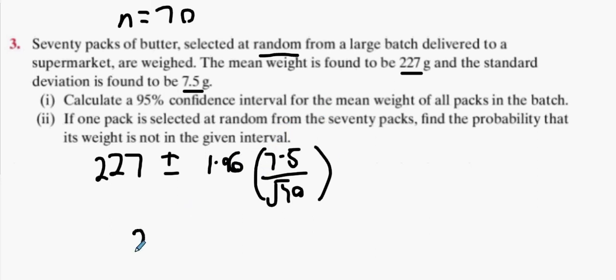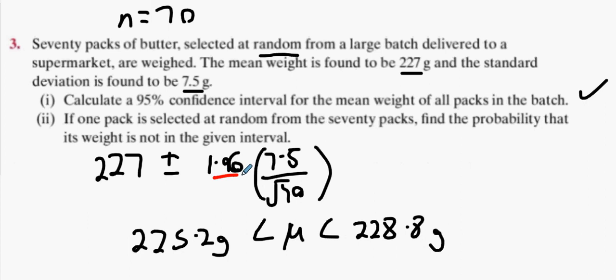Add it on, take it away and you should get an answer of 225.2 grams is less than your mean is less than 228.8 grams. That's our 95% confidence interval because it has the 1.96.